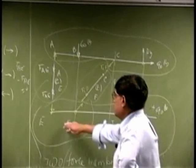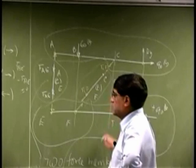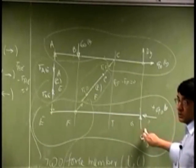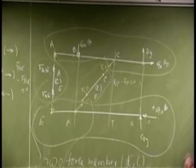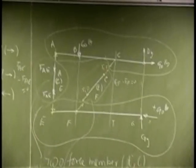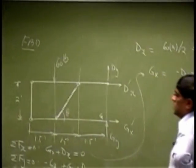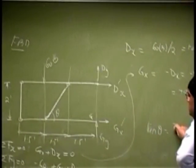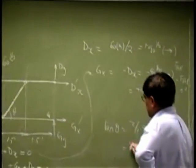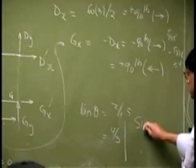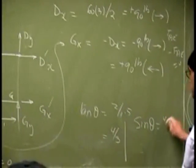But if I look at the bottom member, you have one unknown here, one unknown here, and one unknown here. There are three unknowns and you could write three equations. So you look at the bottom one. Let us take this angle as theta. Then tangent theta would be 2 divided by 1.5, that is 4 over 3, which means that sin theta is 4 over 5.